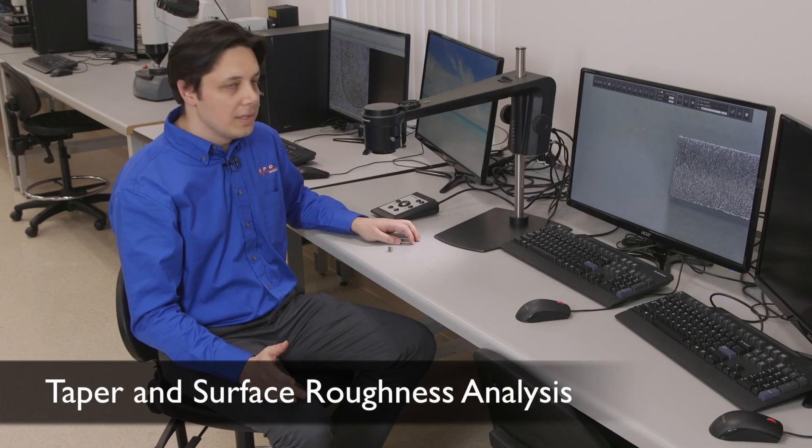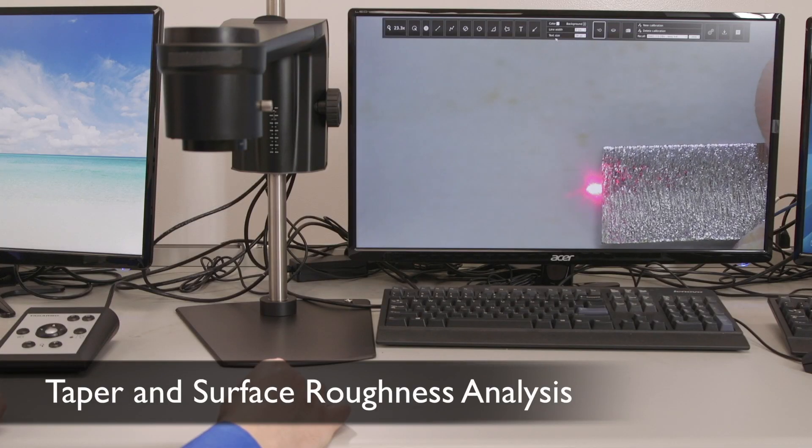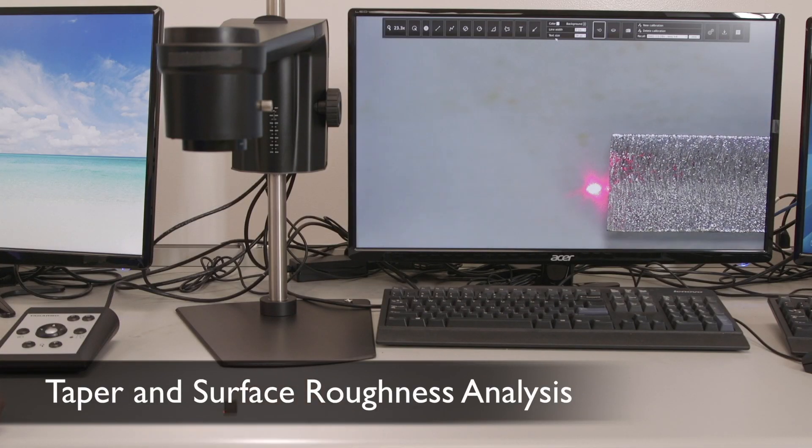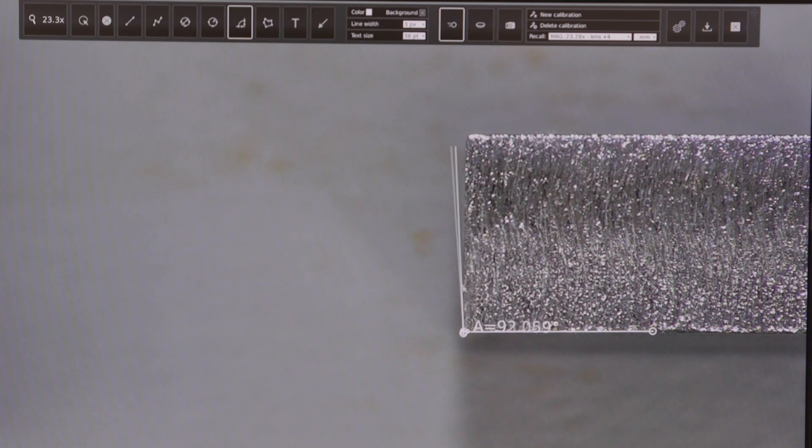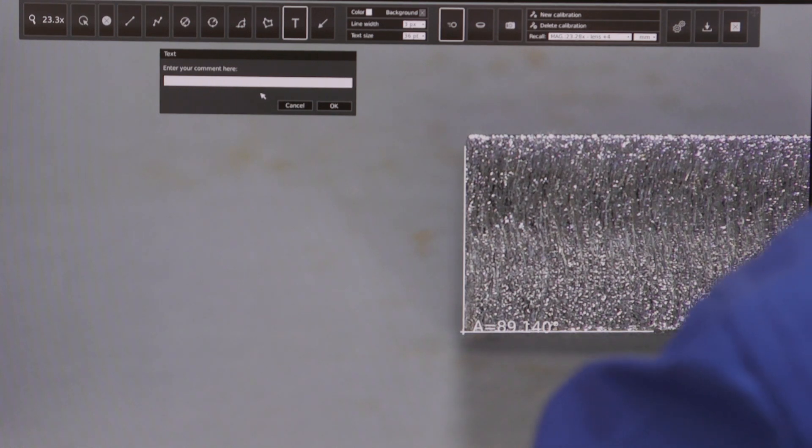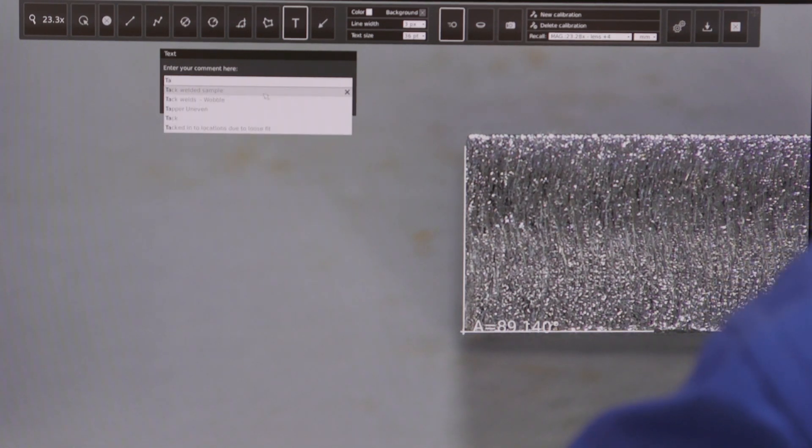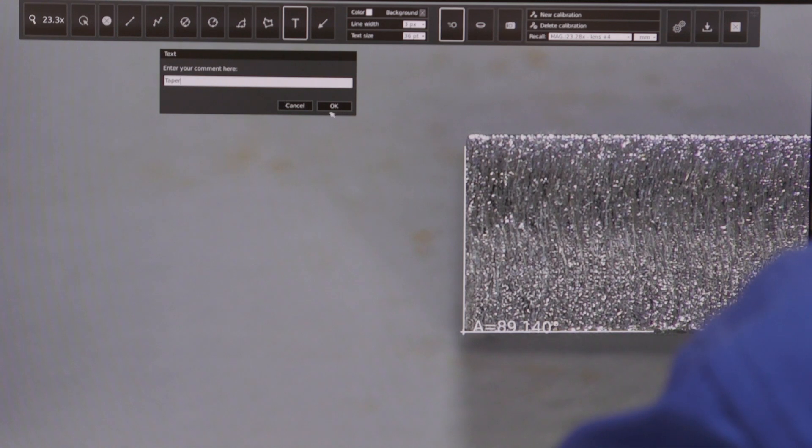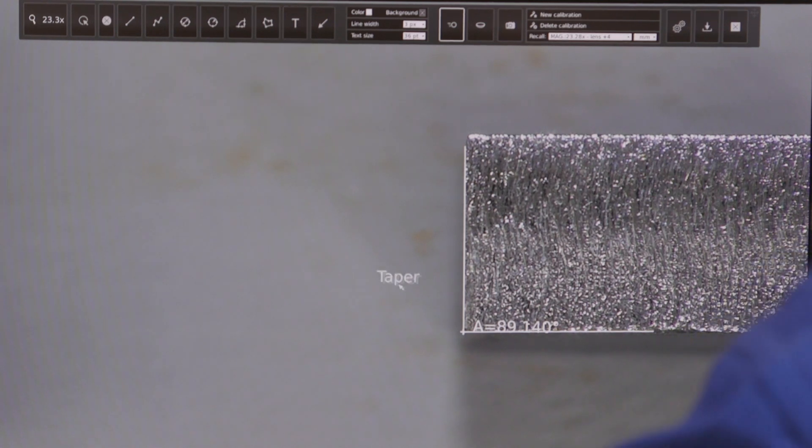In this case, I've cut a relatively thick stainless steel sample on the IPG laser cube requested by the customer. And I'm measuring the taper angle of the cut and the surface roughness of it at different depths of the cut to see if it meets the customer requirements.